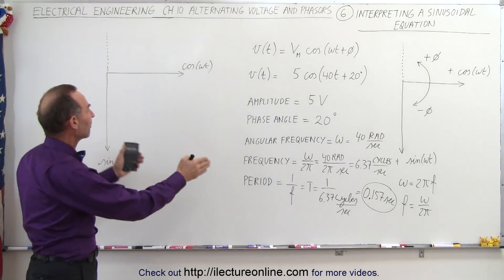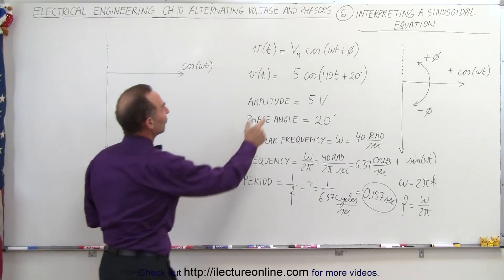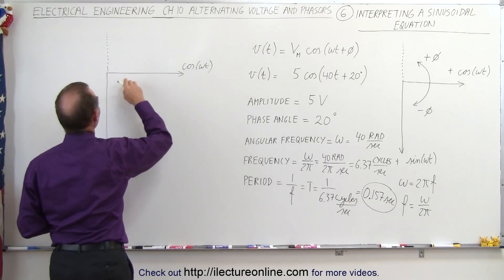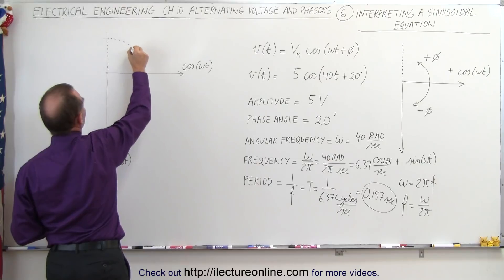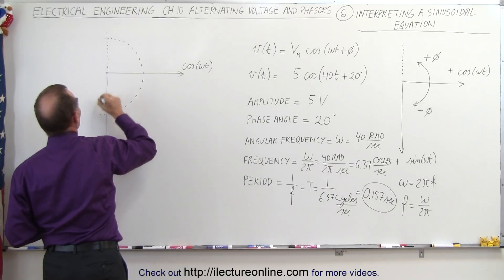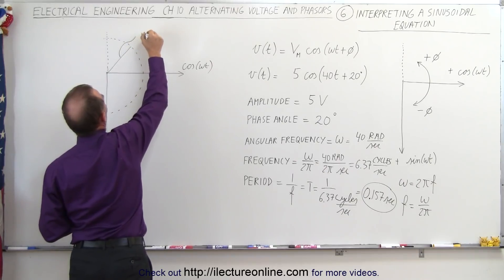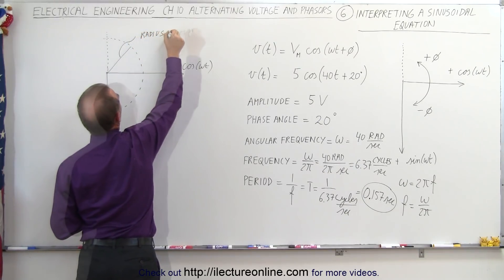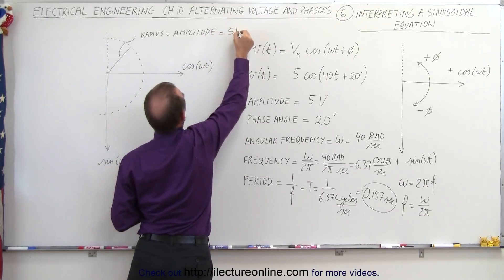Now let's go ahead and graph that on our graph right here. First of all, the amplitude is 5, so that would be a distance of 5 away from the point right there. So we can draw our circle, and let the radius of the circle represent the amplitude. In this case, that would be equal to 5 volts.